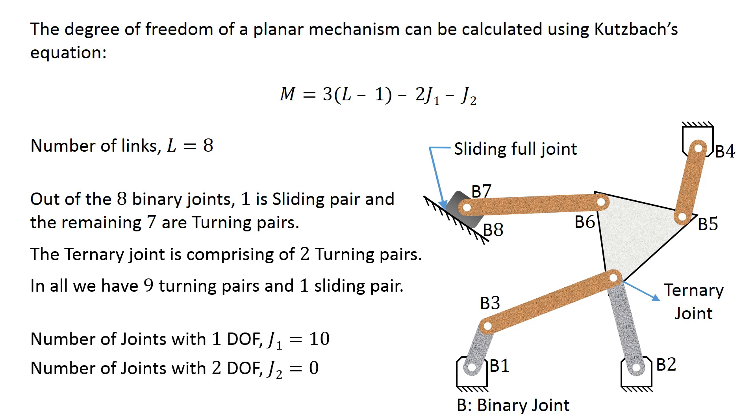Therefore the number of joints with 1 degree of freedom equals 10, and there is no joint with 2 degrees of freedom. Keeping the required values in Kutzbach's equation, we get the degree of freedom of this mechanism equals 1.